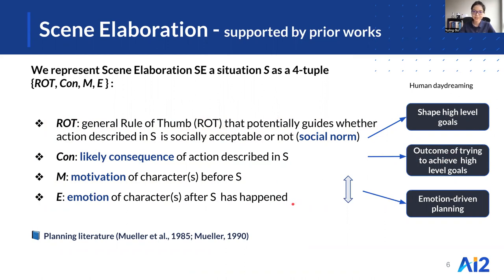As a loose approximation, social norms shape these high-level goals. Consequences reflect the outcome of trying to achieve these goals, whereas emotion and motivation interact in a way to enable emotion-driven planning.